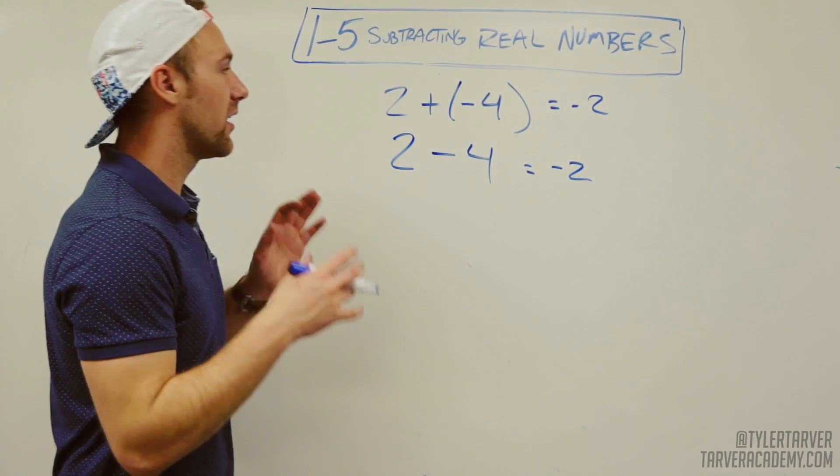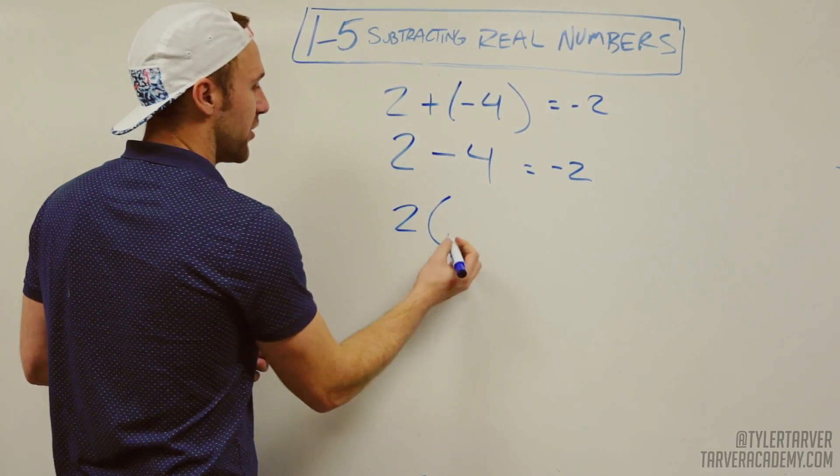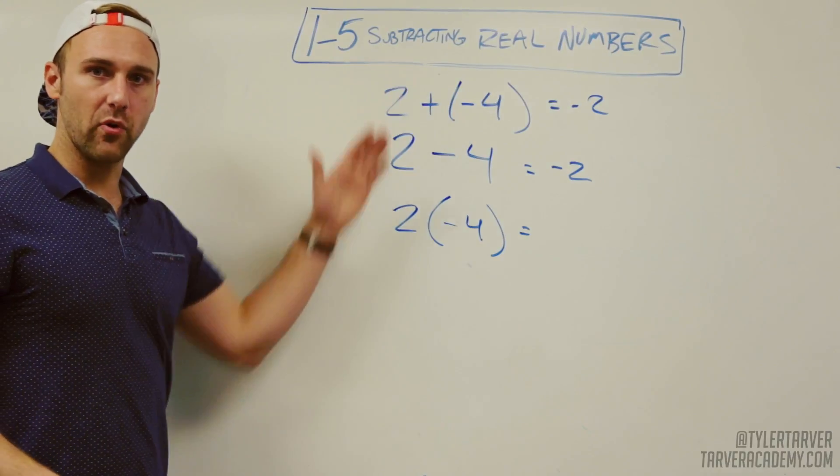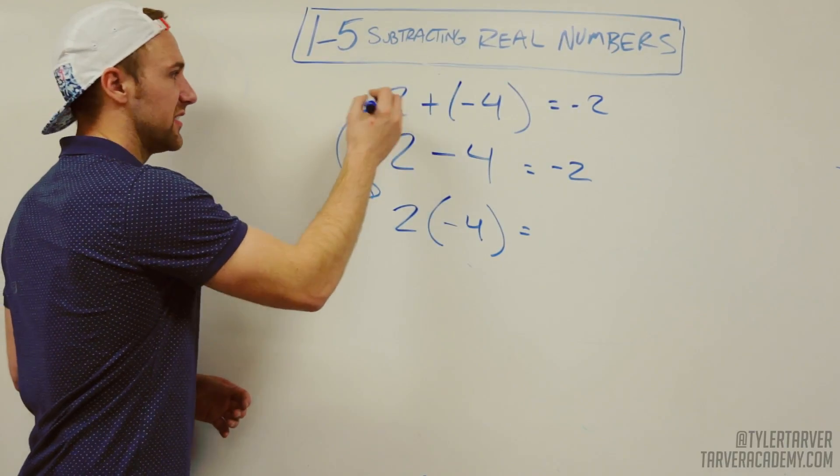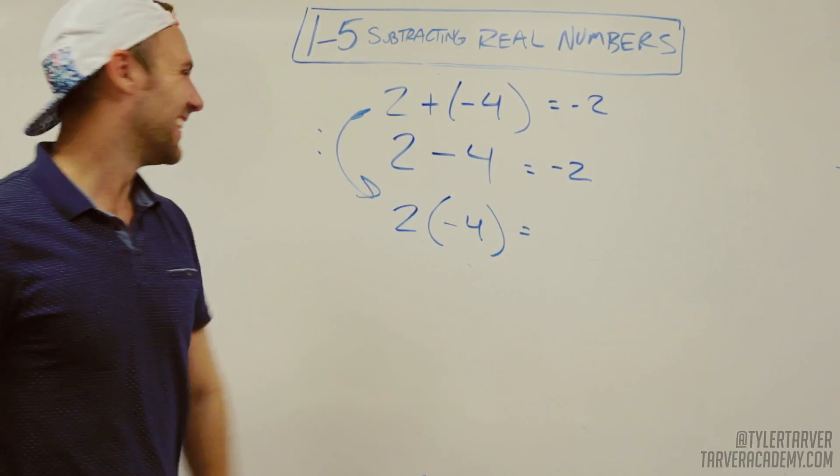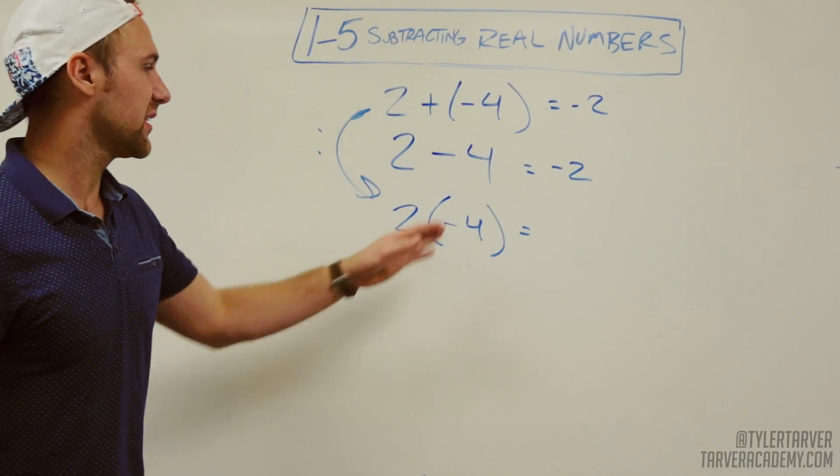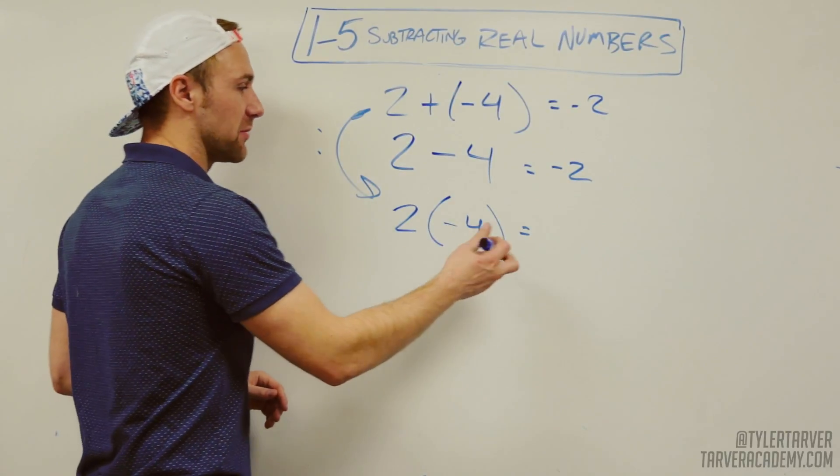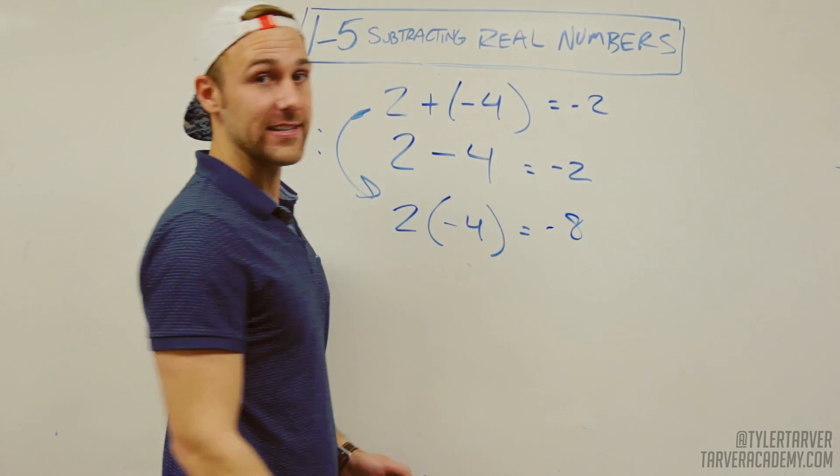So keep that in mind. A way that people get confused - say you had 2 negative 4. This is not the same problem. These are not the same. This is not the same because when you have the parentheses, you have a number that's right next to it. That means multiply. So it'd be negative 8.